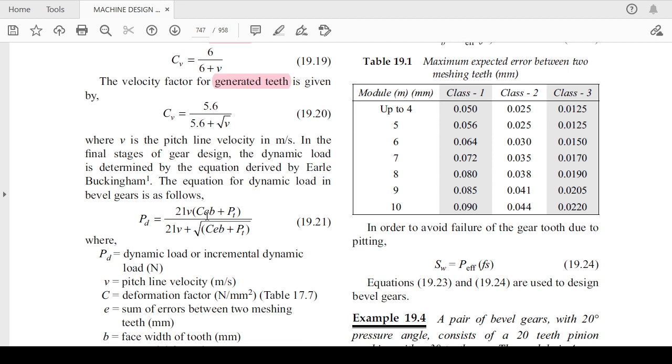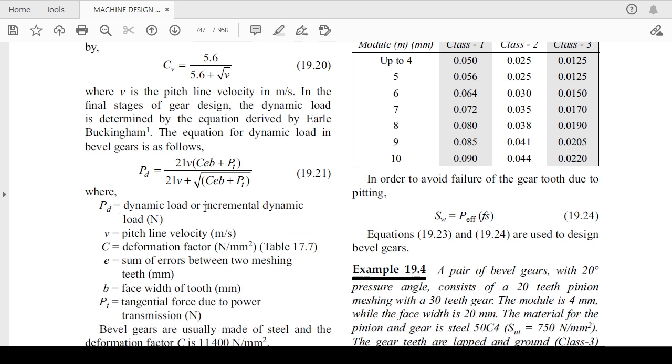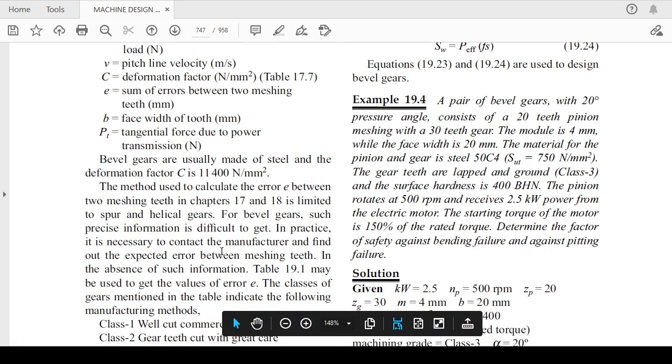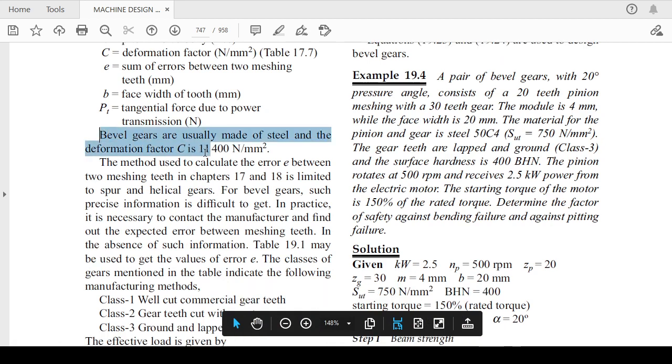The formula for the dynamic load for the bevel gear can be rewritten as 21 v C_e v plus P_t divided by 21 v plus under root C_e v plus P_t. P_d is dynamic load, then pitch line velocity, deformation factor, sum of the errors between the two meshing teeth, face width of the tooth, as well as the tangential force due to the power.